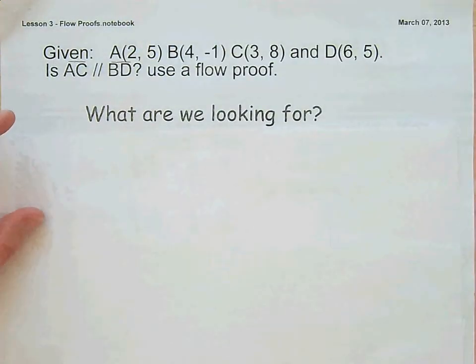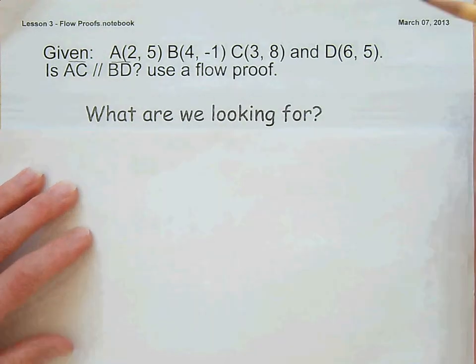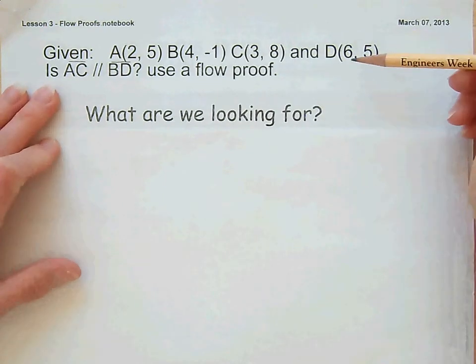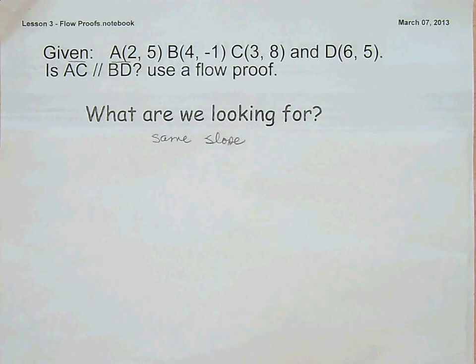Let's start with this one. We're given coordinates for these four points. How can we see if segment AC is parallel to segment BD? What does it mean to be parallel? Remember, that means they have the same slope. So we have to find the slope of AC and slope of BD and see if they are the same.